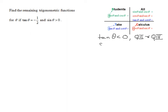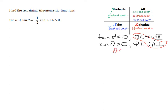The other piece of information we're given is that the sine of theta is greater than zero — it's positive. The sine of theta is positive in quadrant one and also in quadrant two. Looking at both conditions together, they are both true in quadrant two. Therefore, angle theta has to terminate in quadrant two.